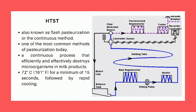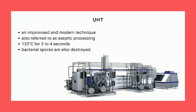HTST is also known as Flash pasteurization or the continuous method. It has become one of the most common methods of pasteurization today. HTST pasteurization is a continuous process that effectively and efficiently destroys microorganisms in milk products. The milk is heated to at least 72 degrees Celsius for a minimum of 15 seconds, followed by rapid cooling. It is also referred to as aseptic processing.